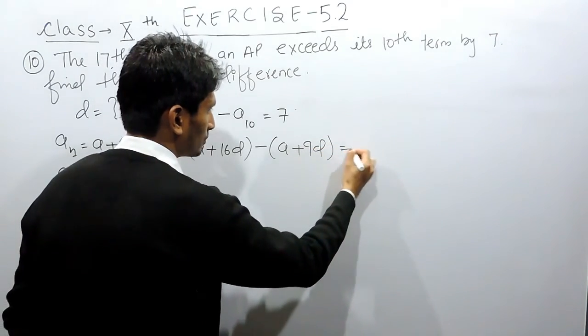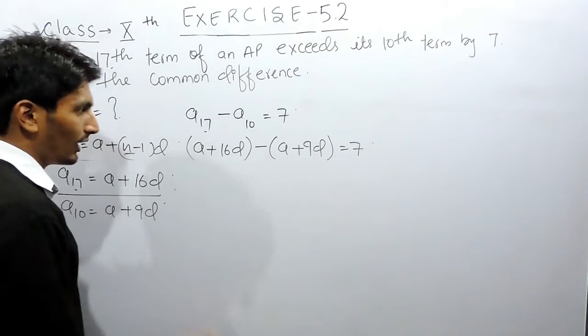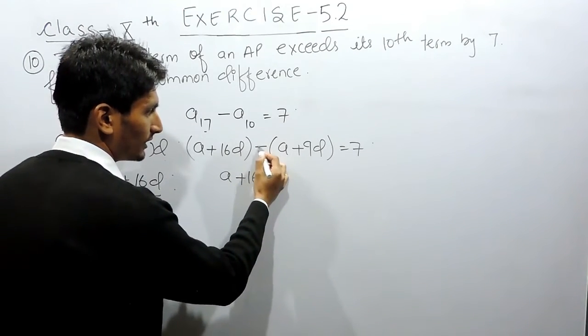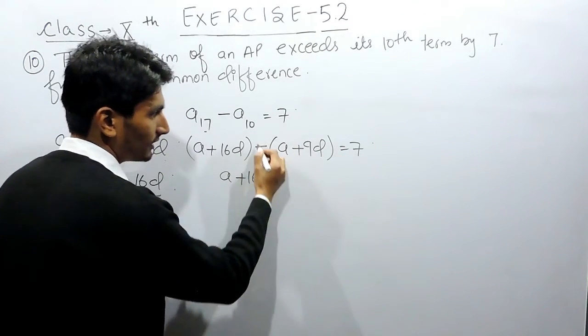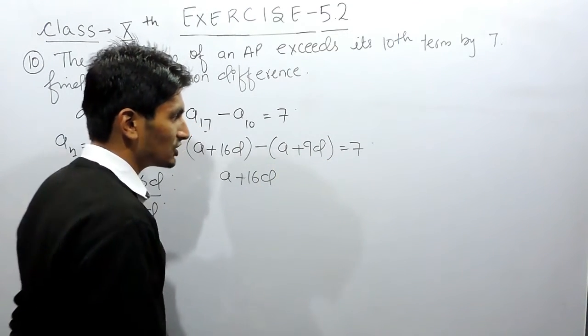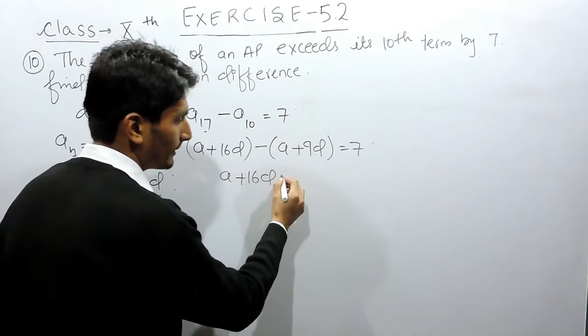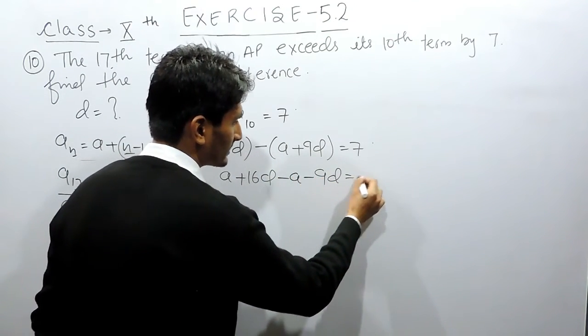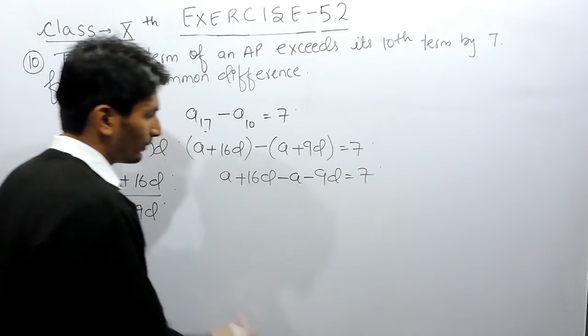Now I can open the bracket. There is a negative sign outside the bracket, so when multiplied inside all signs get changed. This positive A will become negative A, and positive 9D will become negative 9D.